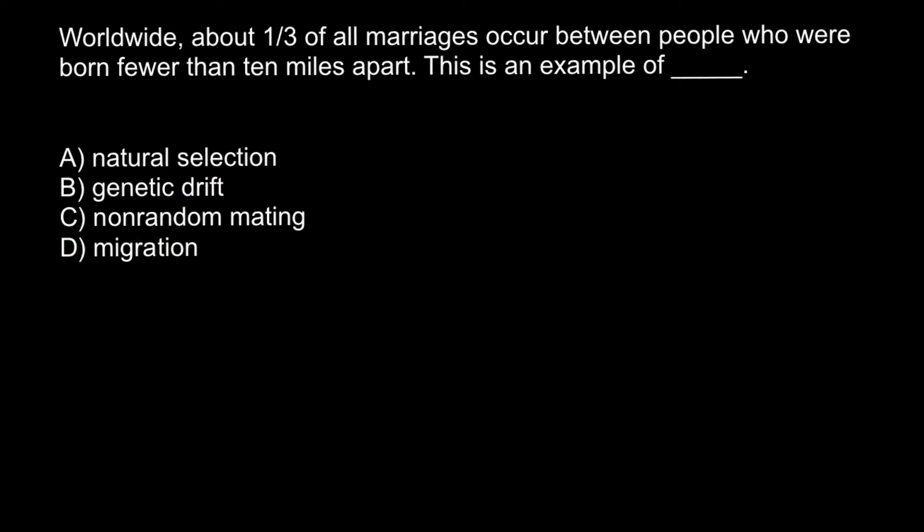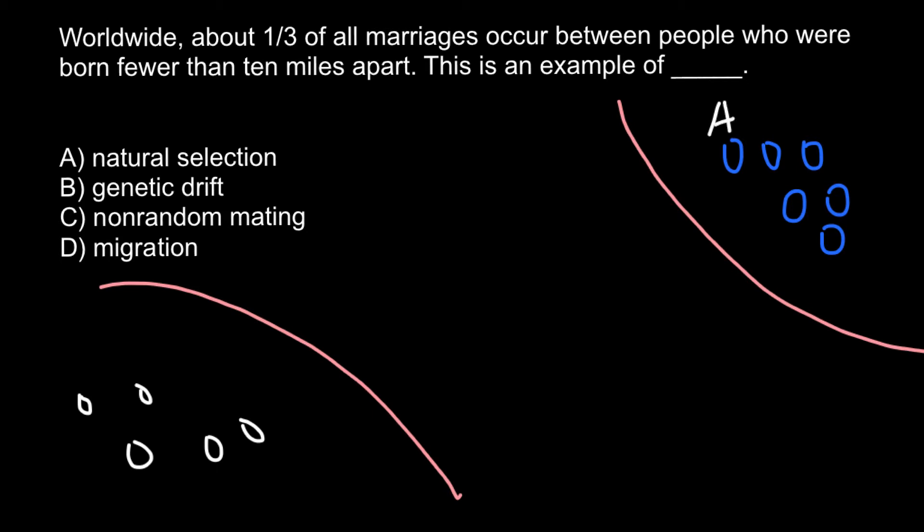So let's talk about migration. And migration in population genetics—imagine that here we have two populations of bugs. So here white bugs and here we have blue bugs. And let's say that blue color is due to dominant allele A. So we would have frequency of the dominant allele A here as 100%.